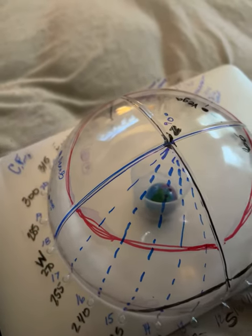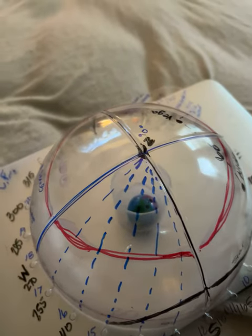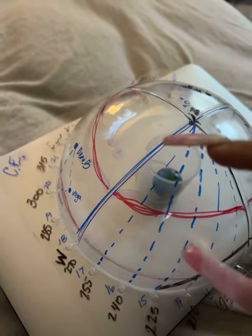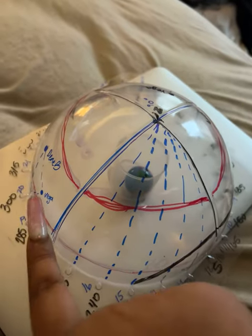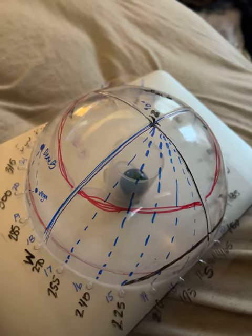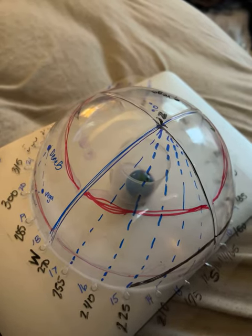The Earth spins inside the celestial globe, and depending on where a star is and at what angle the Earth is spinning, that determines whether or not that star would be visible, depending on where you're at in the world.